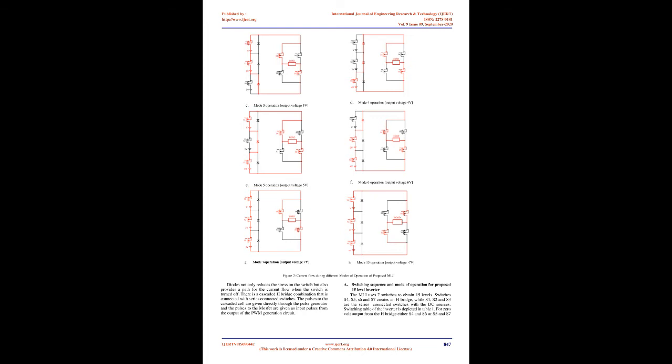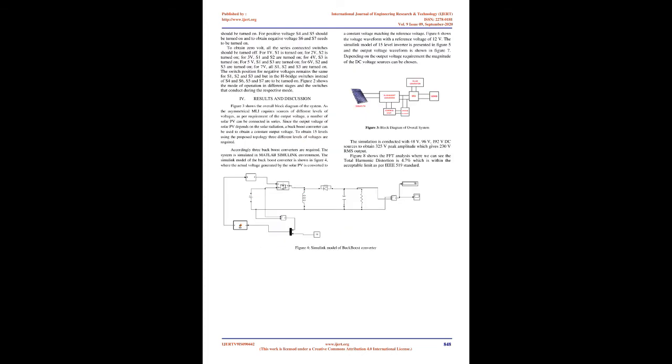In this paper, a hybrid technology is proposed where higher numbers of levels are obtained with a reduced number of switches and fewer DC voltage sources. In cascaded MLI, using 8 switches we can obtain 7 levels, and 12 switches are required for 9 levels. The proposed topology uses only 7 MOSFET switches and 3 DC voltage sources to obtain 15 levels. The DC voltage source magnitudes are designed in binary form: V, 2V, and 4V respectively.